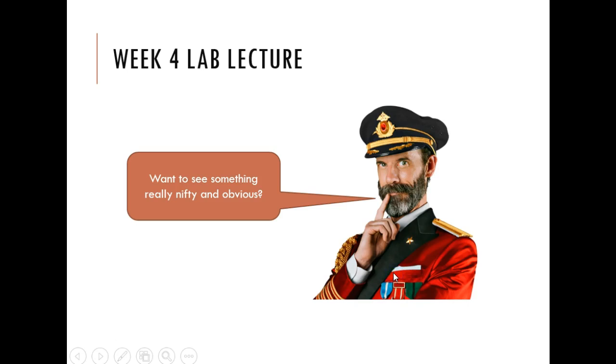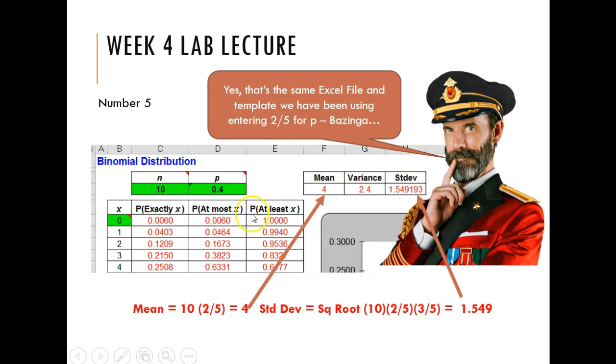Want to see something really nifty and obvious? Remember the binomial distribution calculator I showed you? It does this. So if I put in my p of two-fifths, the mean I get is 4. The standard deviation, of course, I would have to round it to three decimal places, but it would be 1.549.